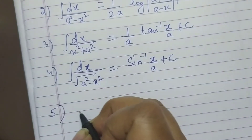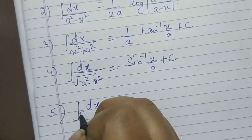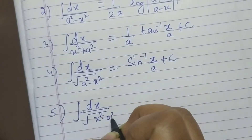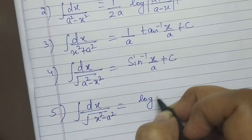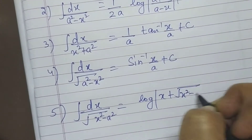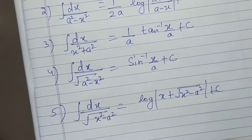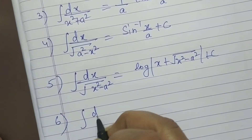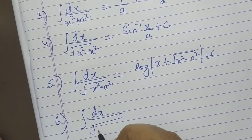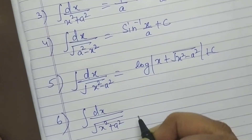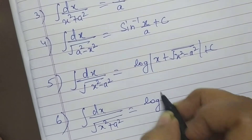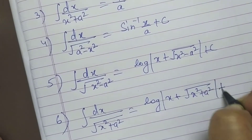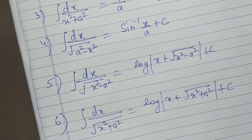Fifth formula: dx upon √(x² − a²) equals log|x + √(x² − a²)| + c. Sixth formula: dx upon √(x² + a²) equals log|x + √(x² + a²)| + c. These are the formulas.